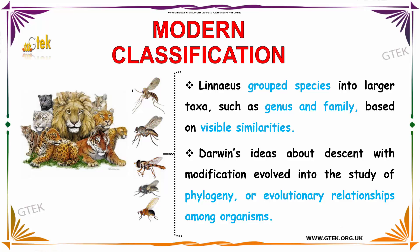In modern classification, the lineage grouped species into large taxa such as genus and family. It is based on visible similarities. And Darwin's ideas about descent with modification evolved into the study of phylogeny, or evolutionary relationships among organisms.